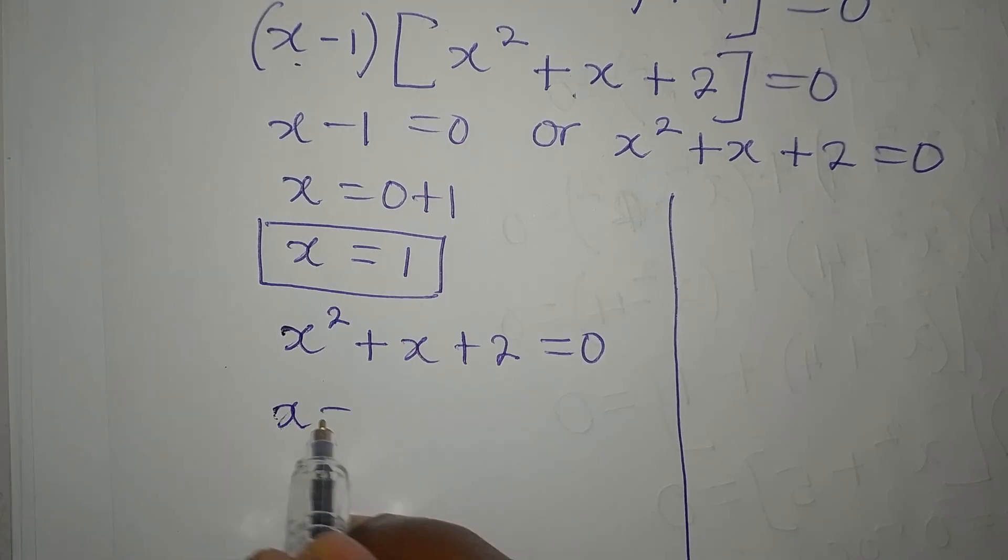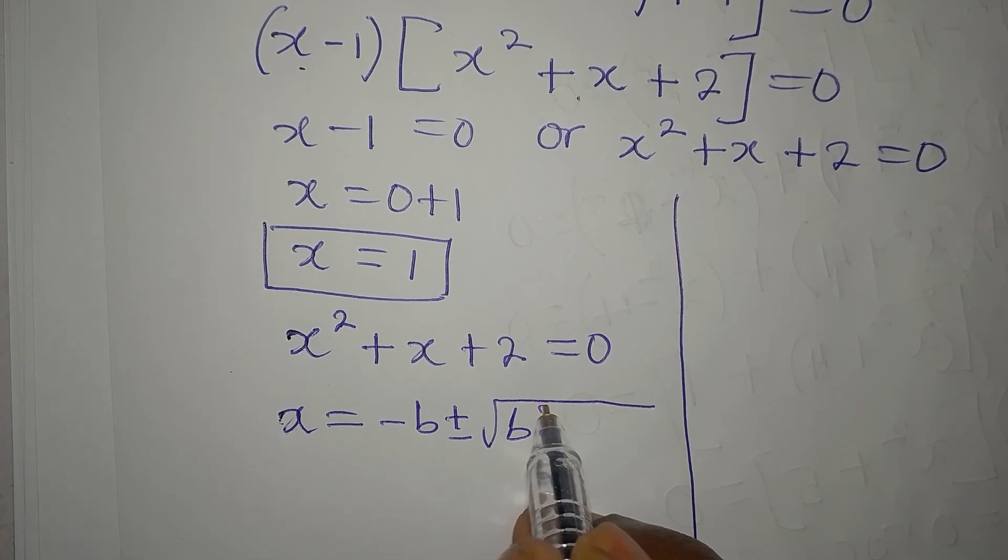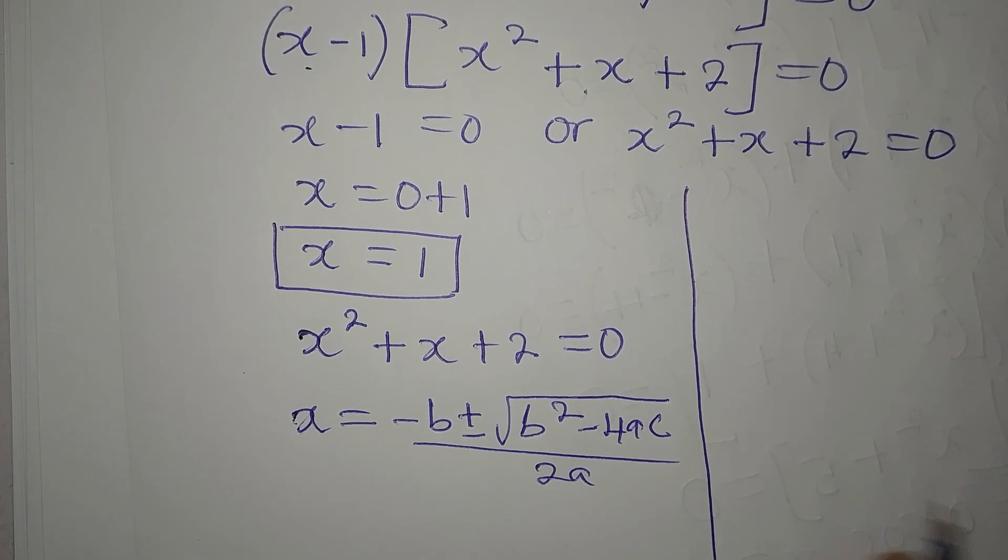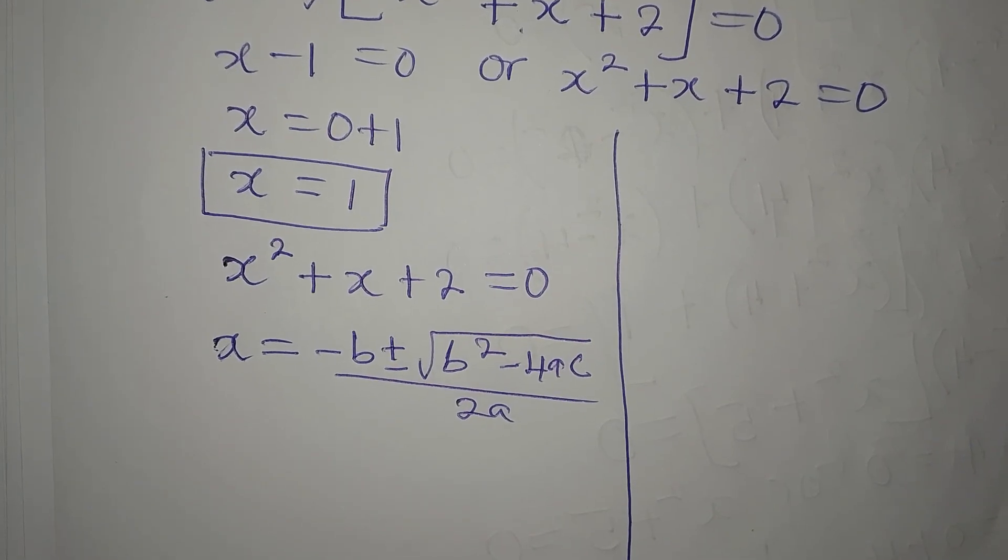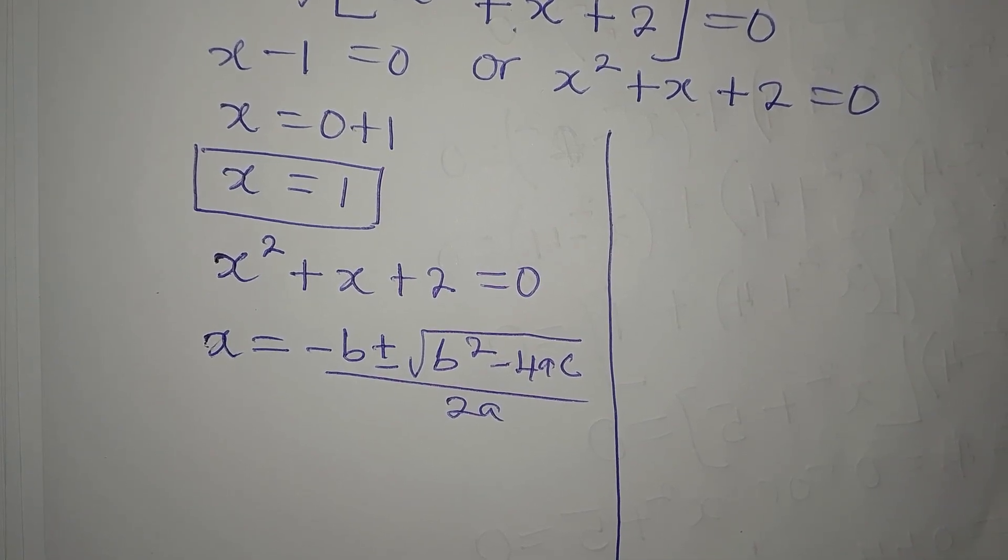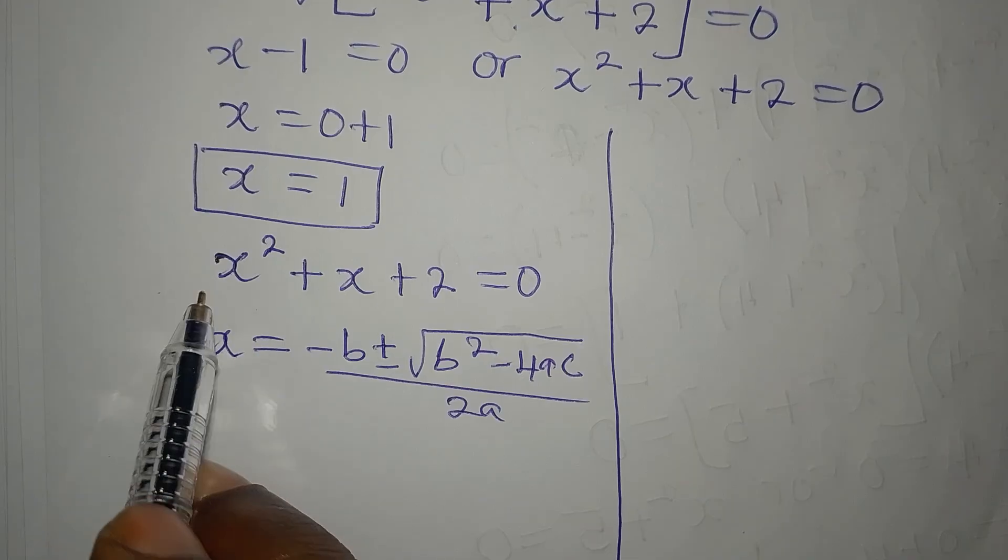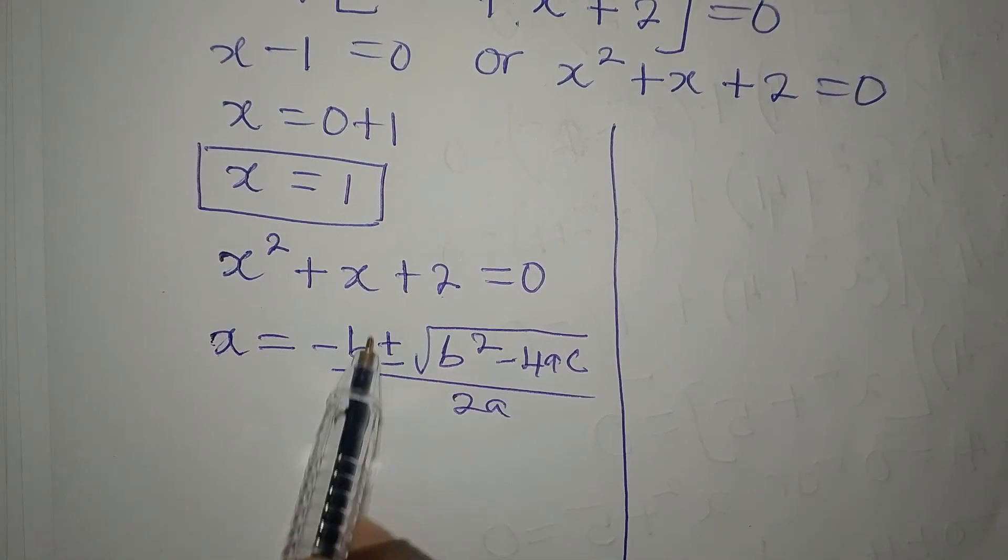The formula is x equals minus b plus or minus the square root of b squared minus 4ac, all over 2a. In case you're asking why I always use the formula, it's because the formula can solve every quadratic equation, whether the one that will give real solutions or complex solutions. Now, from here, our a is 1, b is 1, c is 2. So let's substitute into this formula.